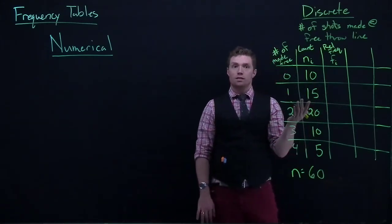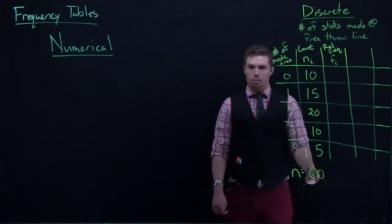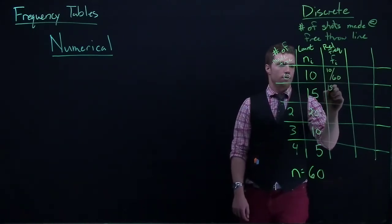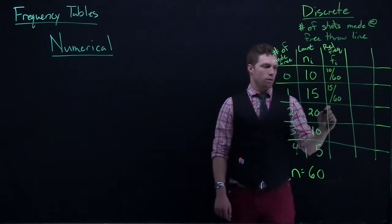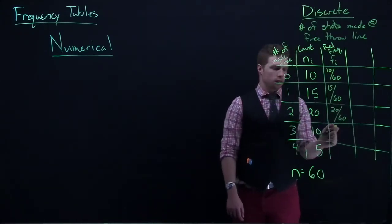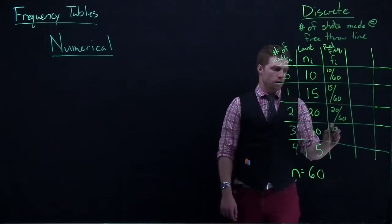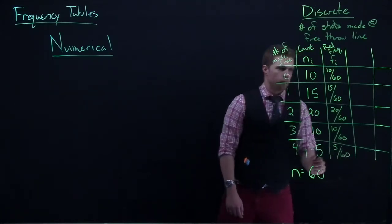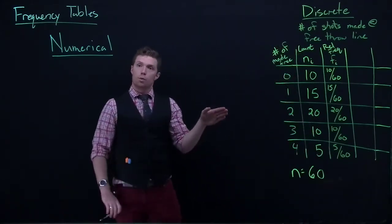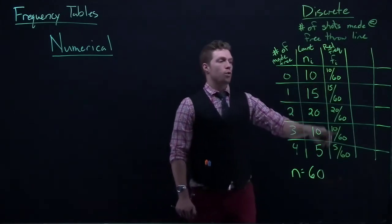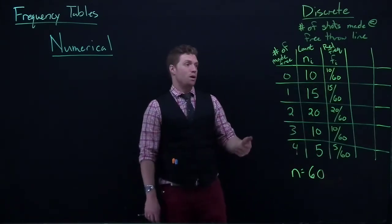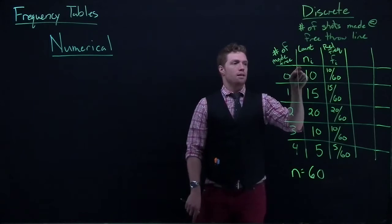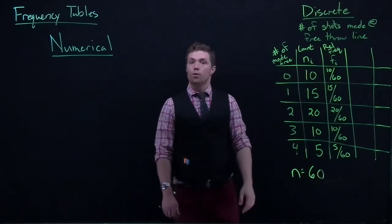So the relative frequency is really simple. We just take the count and we divide by the sample size. So this first one is just going to be 10 divided by 60. Then we've got 15 divided by 60, 20 divided by 60, 10 divided by 60, and 5 divided by 60. Now typically when you see these reported, especially from a computer output, you're going to see these reported in decimal form. That's how you would calculate them, is just take the count, divide it by the sample size, and that gives us our relative frequency.